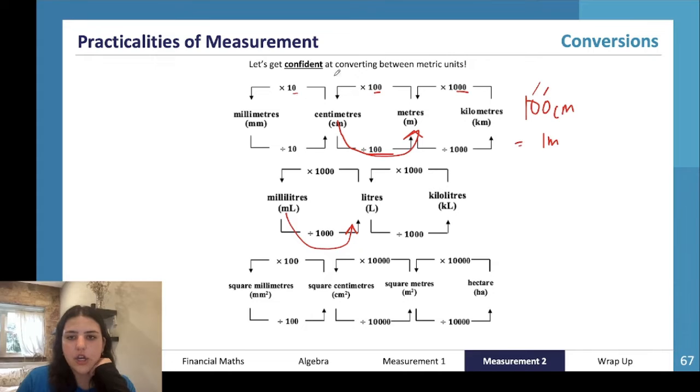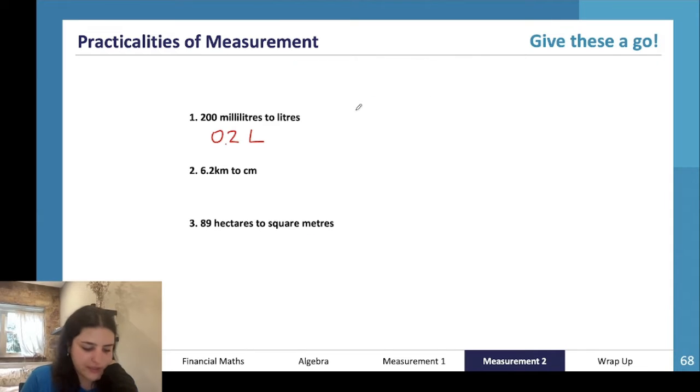6.2 kilometers to centimeters. Kilometers to centimeters is going to be times by a thousand and then times by a hundred. So 6.2 times by a thousand is 6200, and then times that by a hundred.